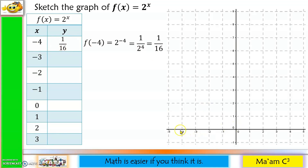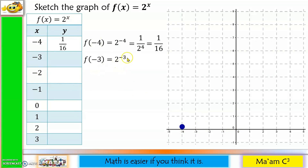At negative 4, we divide 1 unit into 16 equal parts; the first part is 1 over 16. For negative 3: f(-3) = 2 raised to negative 3, which becomes 1 over 2 cubed. Since 2 cubed is 8, we get 1 over 8. We plot negative 3 at 1 over 8 by dividing 1 unit into 8 equal parts.